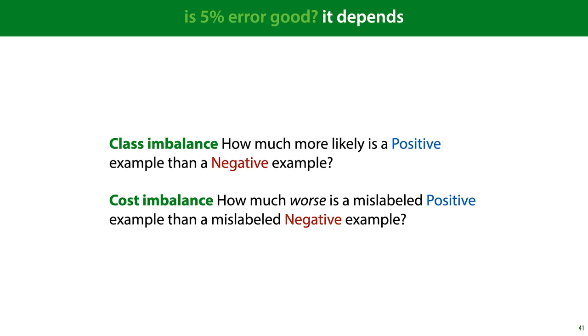So when we want to know whether an error of 5% is good, it depends. And it depends on two things specifically. First, what we've already discussed, the class imbalance. How much more likely is a positive example than a negative example? But there is also cost imbalance. How much worse is a mislabeled positive example than a mislabeled negative example?